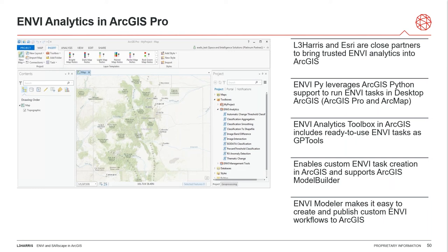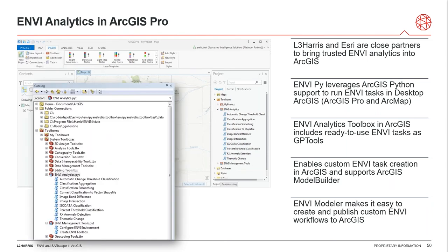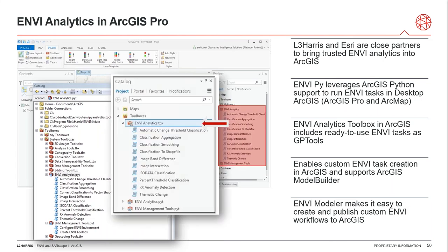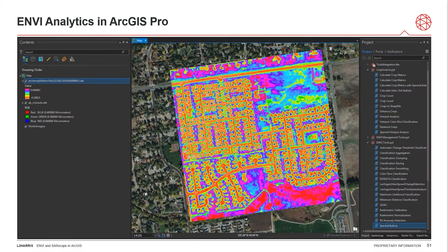ENVIpy for ArcGIS offers integration for desktop users in either ArcMap or ArcGIS Pro, generating ArcGIS Python toolboxes containing geoprocessing tools associated with tasks provided by ENVI Desktop. Once installed, an ENVI Analytics toolbox is automatically added to ArcGIS Pro or ArcMap containing 10 ready-to-use image processing tools. Custom toolboxes can also be created to meet specific needs with as many ENVI tools as needed. The ENVI Modeler allows creating models of data processing workflows combining multiple tasks — entire models can be exported as a meta-task published as a standalone tool to ArcMap or ArcGIS Pro.